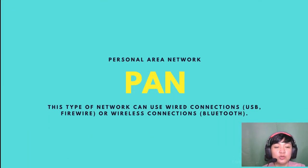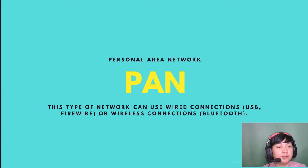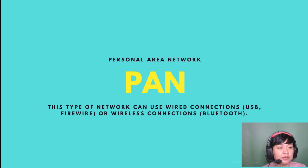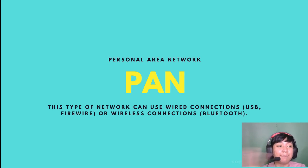The first network type is PAN — Personal Area Network. It includes personal devices communicating at nearby range, like cell phones and laptops. This type of network can use wired connections like USB cables or firewire, or wireless connections like Bluetooth and infrared.